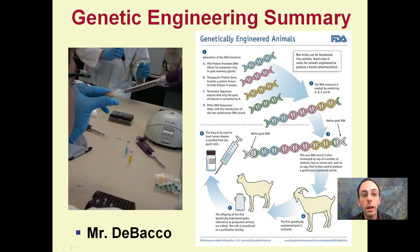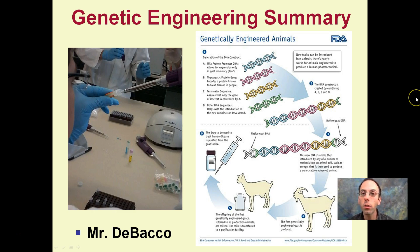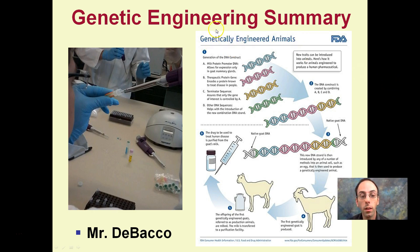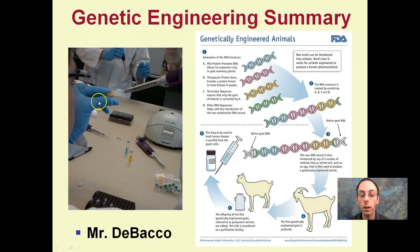Here we're going to look at a genetic engineering summary, and then after the summary we're going to go through a couple stages in experimentation. Starting with the general summary, we're looking at genetically engineered animals — this can also apply to plants. It's the same basic process of changing or modifying different genes in an organism.